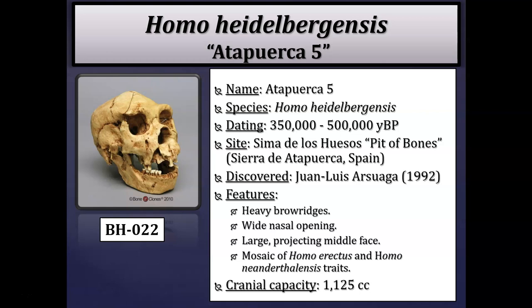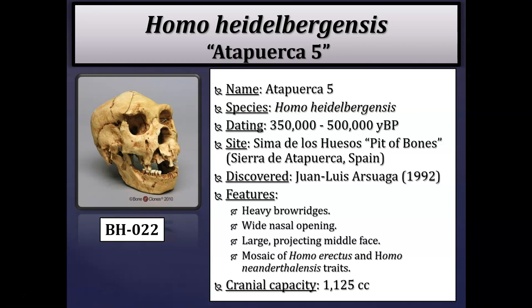This summary slide covers the Atapuerca 5 fossil attributed to Homo heidelbergensis, uncovered at Sima de los Huesos — the 'Pit of Bones' — in Atapuerca, Spain. Features include heavy pronounced brow ridges shared with Homo erectus, and a relatively wide nasal aperture shared with Homo neanderthalensis as a cold adaptation. This fossil is thus a mosaic of Homo erectus and Homo neanderthalensis features. The mid-face region is relatively prognathic — projecting outward from a lateral view — and cranial capacity is approximately 1125 cc's.